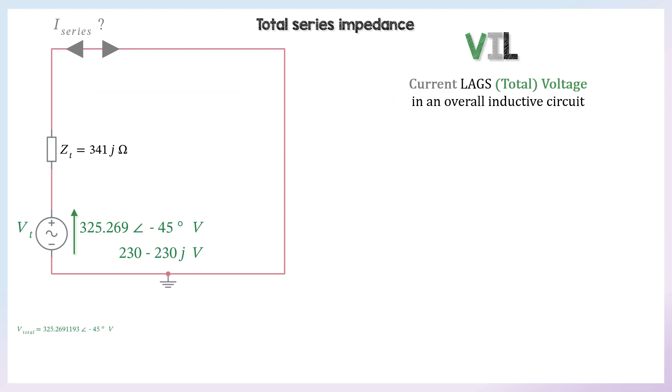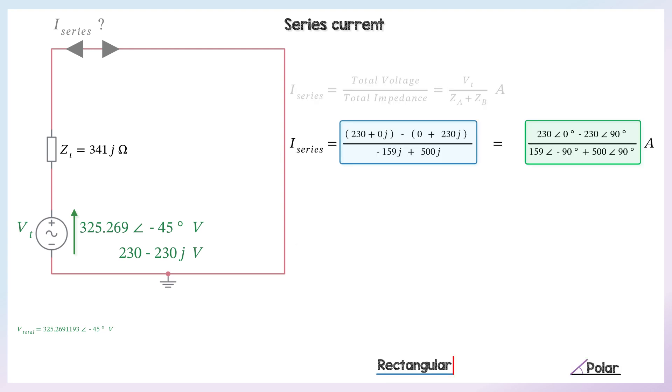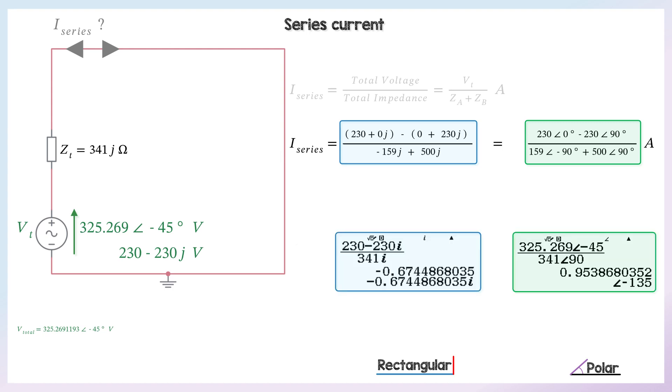But we still don't know which way the currents flow in. So to find the series current, we do Ohm's law. Current is total voltage over total impedance. And we've already worked out ZT. So the series current is basically, in polar, 325 volts, roughly, divided by the total impedance of 341 J. And that comes out as just shy of an amp, 0.953 amps at minus 135 degrees,